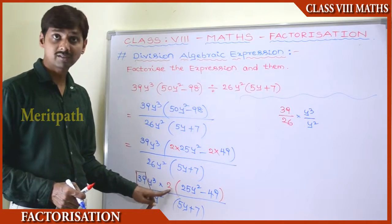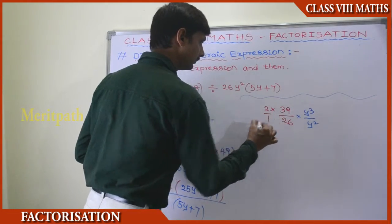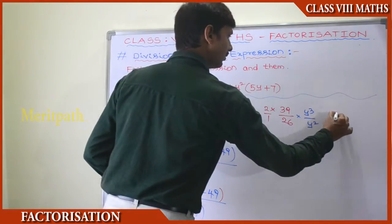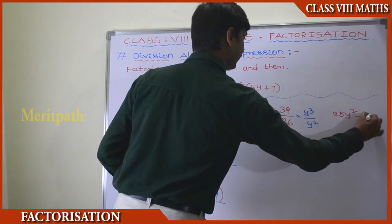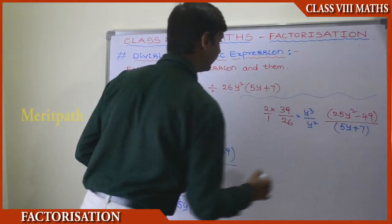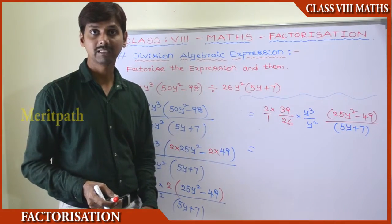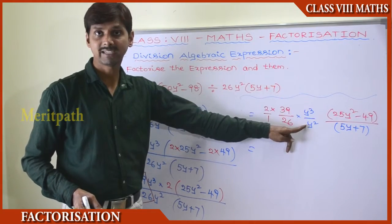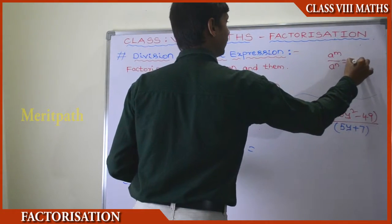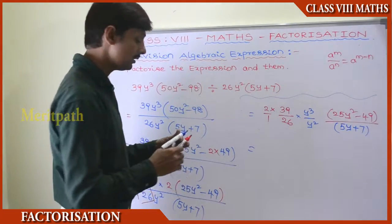So we have 39/26, and the constant term 2 is taken as a group, along with the remaining terms 25y² − 49 divided by (5y + 7). For the variable part, y³ ÷ y² — using the formula a^m ÷ a^n = a^(m−n) — we get y^(3−2) = y¹.